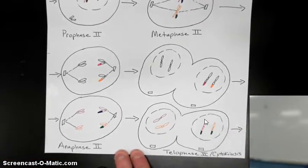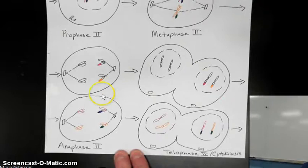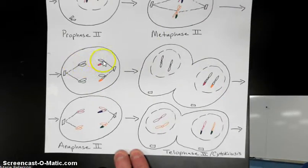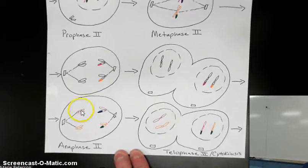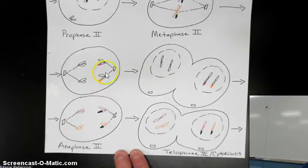Here you can see anaphase II. In anaphase II, the sister chromatids have now separated, so now they have that V-like structure. We have both daughter cells represented, because remember these are different unique chromosomes — they each have different genes on them.